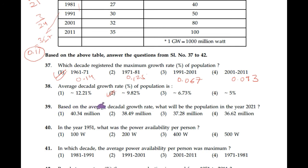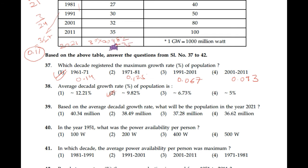Question number 39: Based on the average decadal growth rate, what will be the population in 2021? The growth rate is 9.82%, so 35 multiplied by 0.0982 plus 35 gives us the population in 2021, which will be approximately 38.49 million.